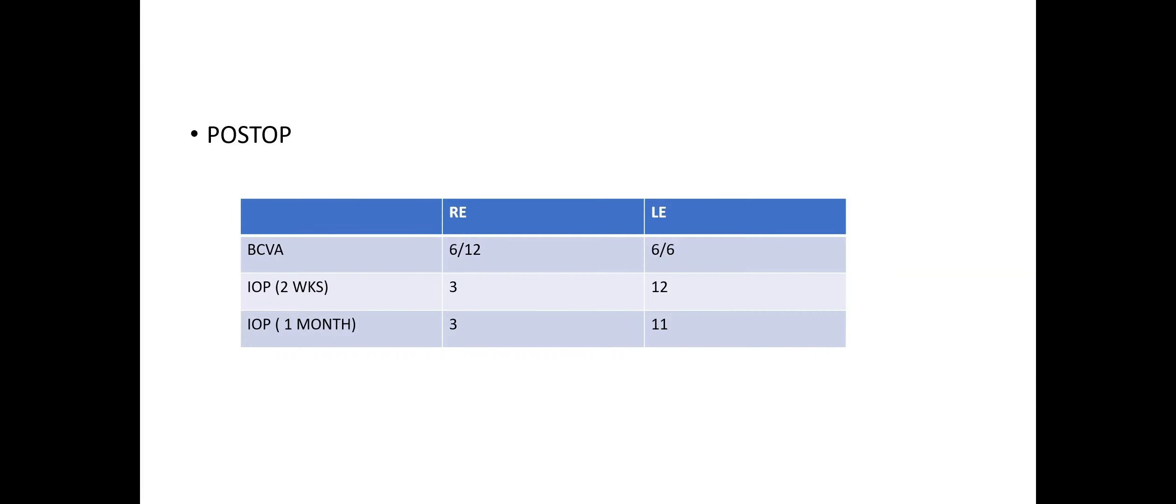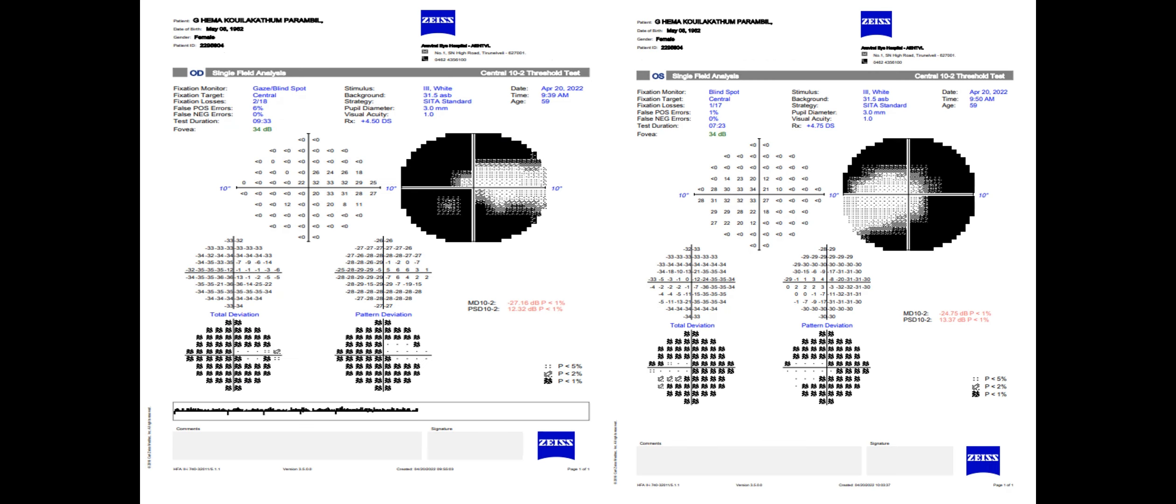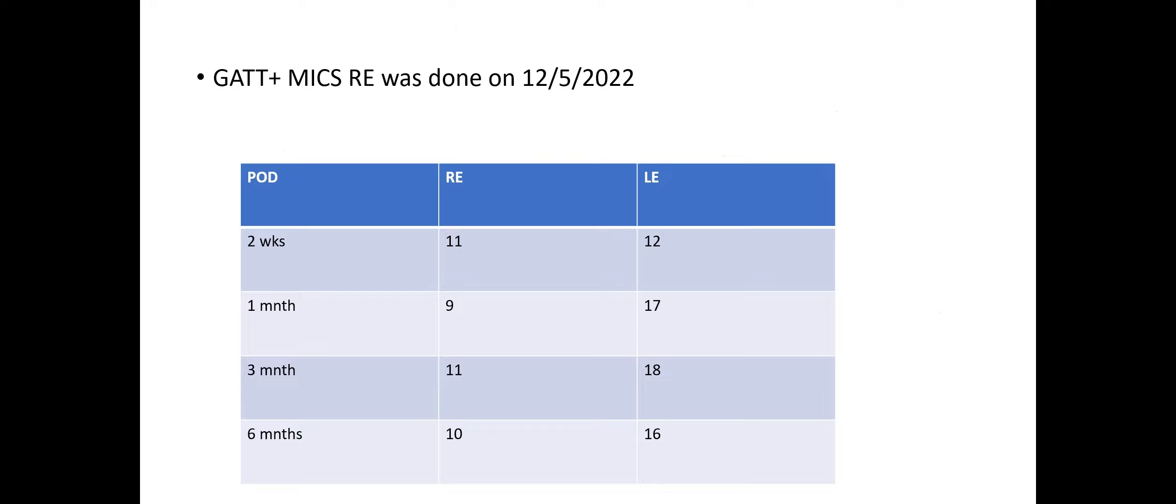Post-operatively, the patient's intraocular pressure was under good control, thereby avoiding complications. Next is a 60-year-old female patient who was a known case of primary open-angle glaucoma and was on maximal medical therapy. This patient had advanced glaucoma and uncontrolled intraocular pressure. The field report shows the uncontrolled nature of the glaucoma with advanced field defect almost approaching fixation.